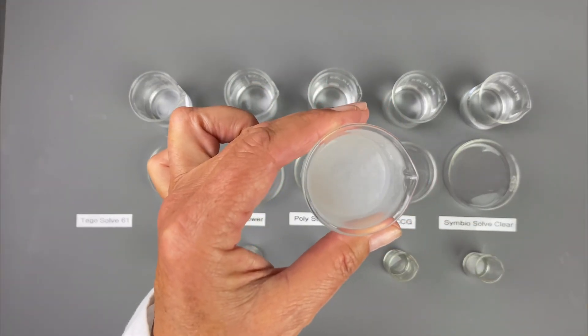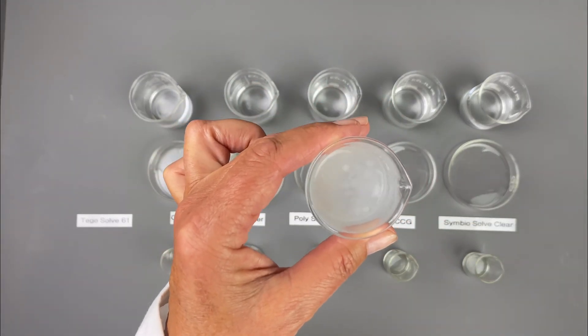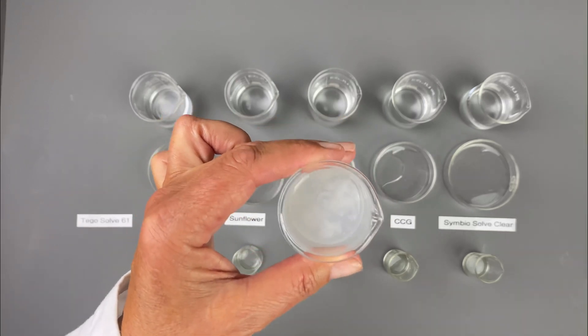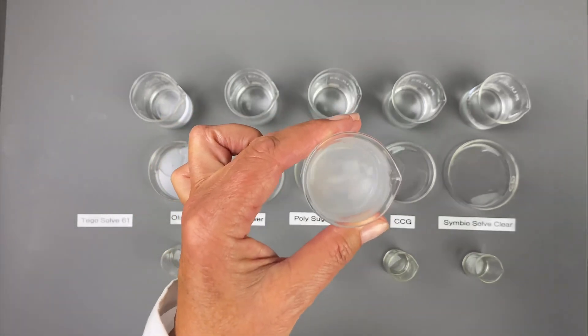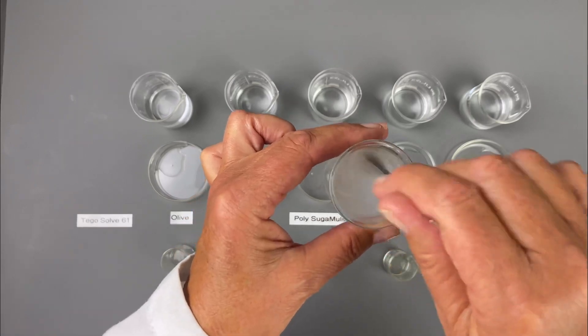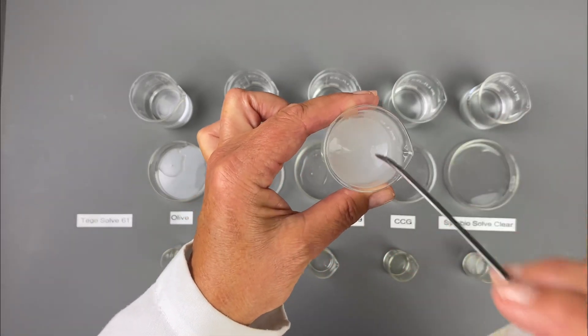For Tegosolv 61, they say it may be cold processable, but it does instruct to heat it up to about 120 Fahrenheit, 50 Celsius. So I will warm that up to see what that will do.